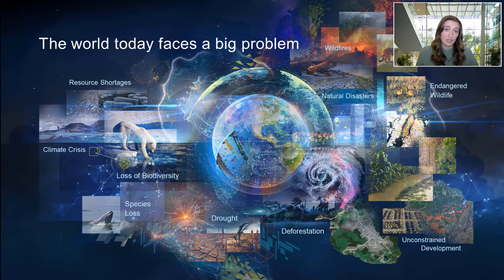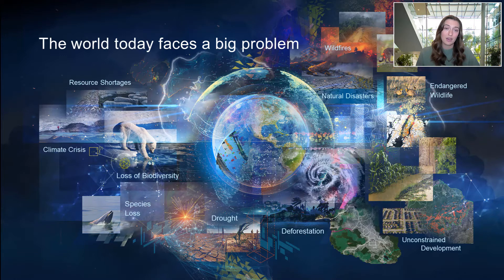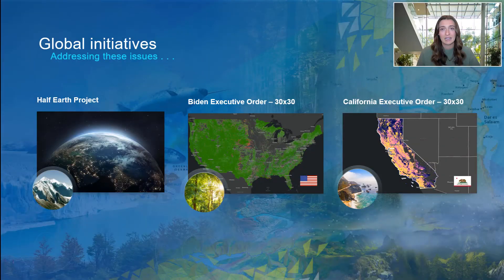Increasing climate change and biodiversity loss threaten the stability and safety of our everyday lives. We're at a point as a global community where we can address the growing issues we face and work to repair them, or continue on the current trajectory and cause irreversible damage. But this is a tipping point, which means that there is work that we can do to address these threats.